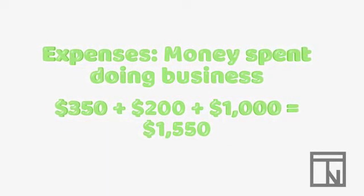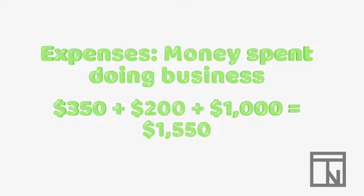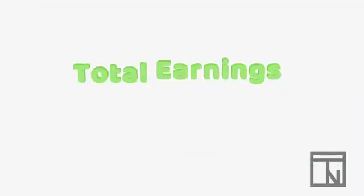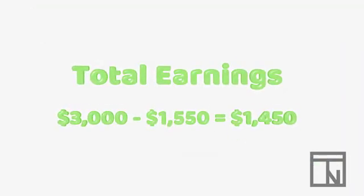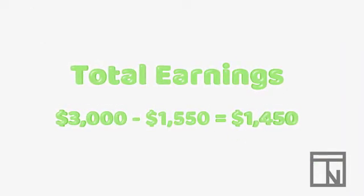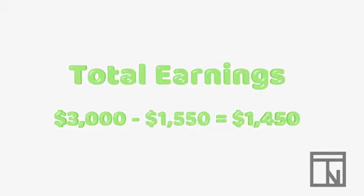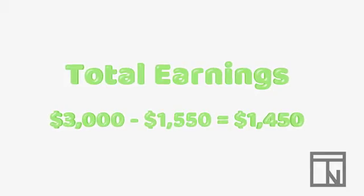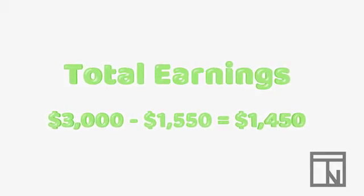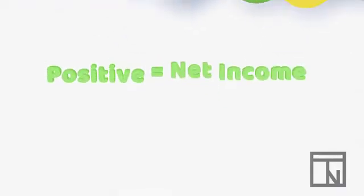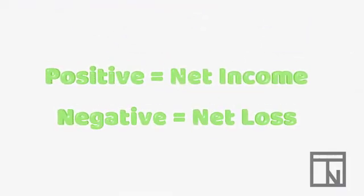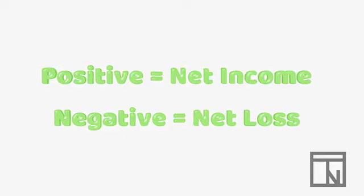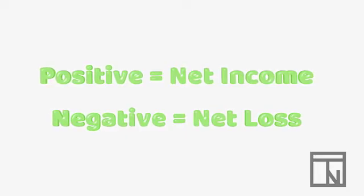$350 plus $200 plus $1,000 equals $1,550 worth of total expenses. So if Jill wants to report her total net earnings for last month, she would subtract the $1,550 of expenses from her $3,000 of revenue. That leaves her with $1,450. Now, is that net income or a net loss? It would be net income, because it's a positive number — Jill still has money left over.